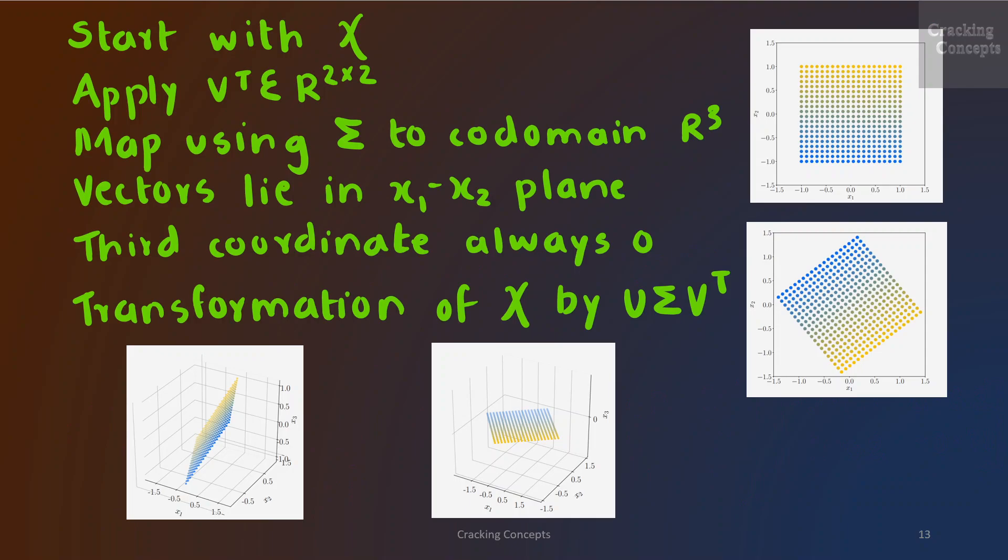Now we'll start with the set of vectors, the given grid. We'll apply V transpose, which is a 2×2 matrix which rotates this grid. The rotated vectors are shown here.